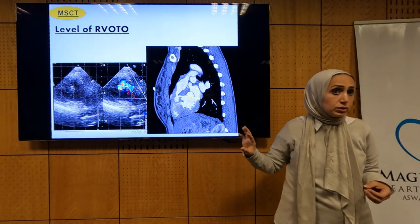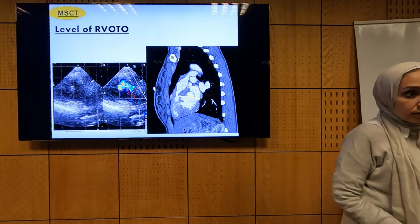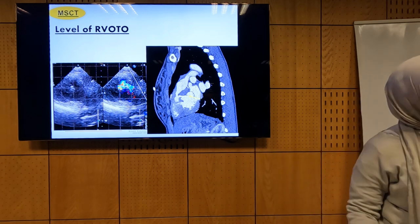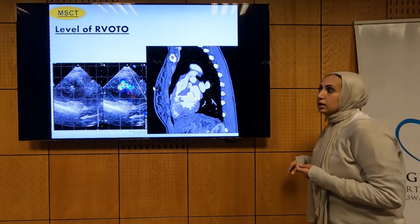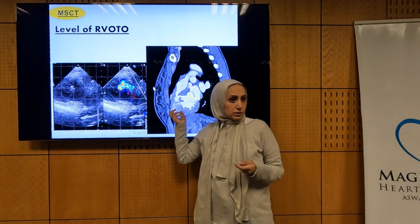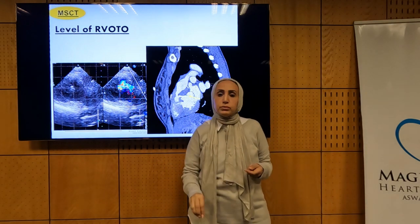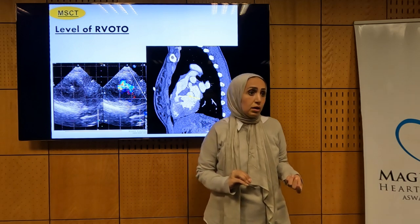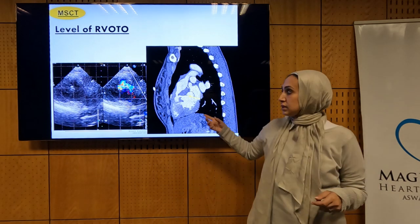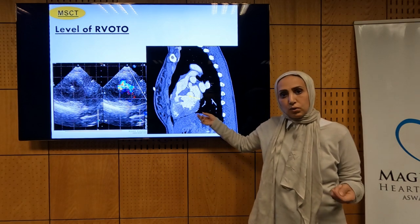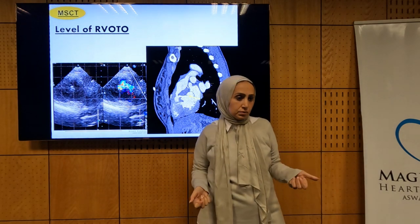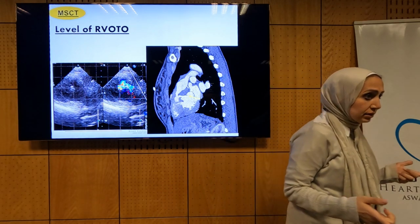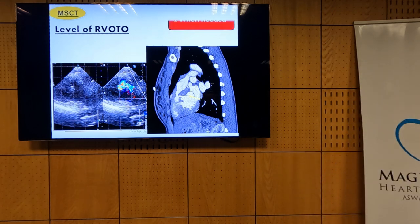Level of RVOT obstruction is crucial to detect. If you can do it by echo, like the previous cases — good. If you have doubt, send for multi-slice CT. Multi-slice CT gives better spatial resolution for anatomical detection. This CT should be gated — it is an intracardiac structure. If done non-gated, you will have ECG artifacts and it will mislead you. When needed for RVOT, ask for multi-slice CT.